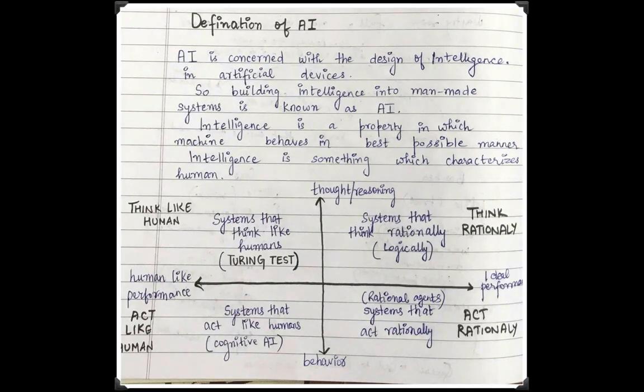First, I will tell you what is AI, the definition of artificial intelligence. AI is concerned with the design of intelligence. The main purpose of artificial intelligence is to design intelligence in artificial devices, that is made by human beings, not existing naturally.